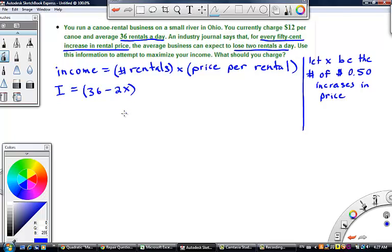Well the 2x is because every time you increase the price by 50 cents you're going to lose two rentals a day, two customers. So that's why this makes sense. The number of rentals would be 36 minus 2x times.